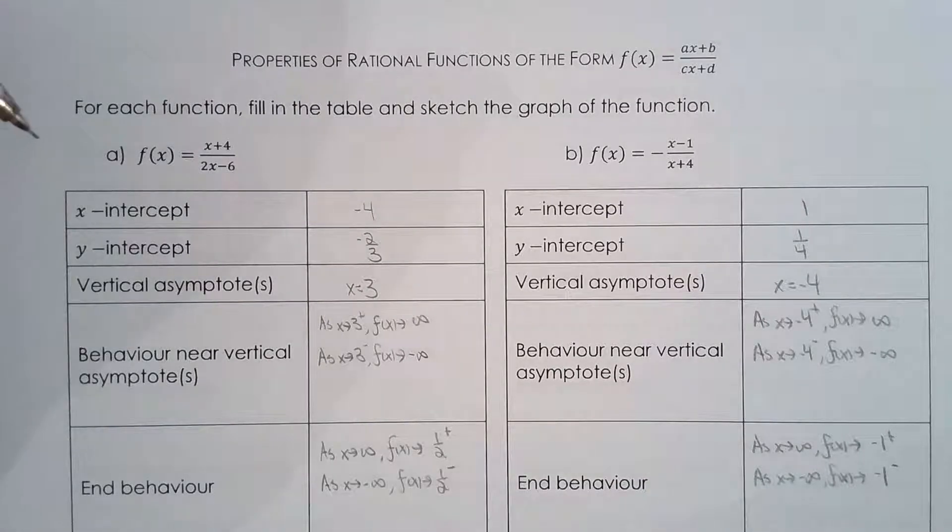This is the second of two homework sheets on rational functions in the form of a linear over linear. This is very similar to what you did with reciprocal linear, reciprocal quadratic.